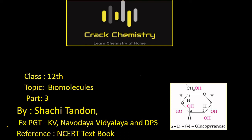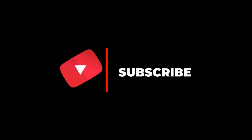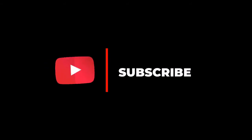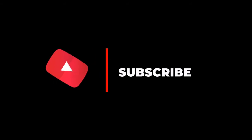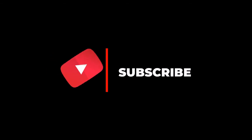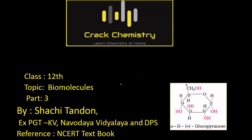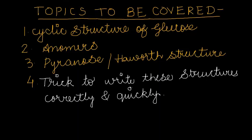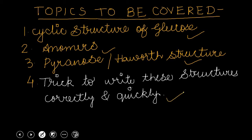Before starting, I would like to remind you to subscribe my channel for getting information about further important uploads. Press the like button in case you like this video and share this video with your friends. So now let's see what we will study today: the cyclic structure of glucose, anomers, pyranose or Havers structure, and finally a trick to write these structures correctly and quickly.